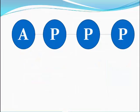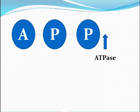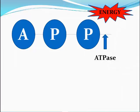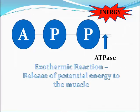Here we have ATP. We need energy to be released to provide the energy for muscular contractions. An enzyme called ATPase breaks the bond between the final two phosphates, and in doing this it releases the energy required for muscular contractions. In releasing this energy, this is termed an exothermic reaction, meaning there is a release of potential energy going to the muscles. This energy only gives us two seconds worth of energy.